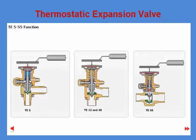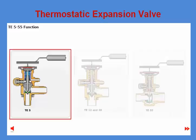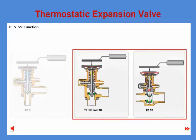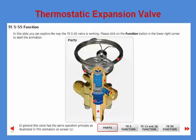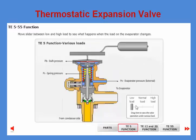The TE5-55 thermostatic expansion valve is designed as a three-component take-apart valve, thereby facilitating flexible installation and easy service. For TE5, both SAE flare and solder connections are available; for TE12, 20, and 55, only solder versions are available. The valve type was originally introduced to the market more than 40 years ago but has been updated a number of times, most comprehensively in 2011.